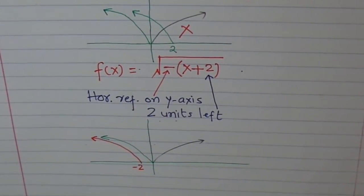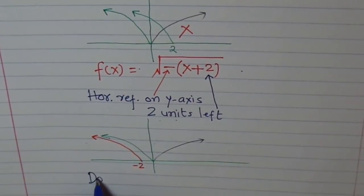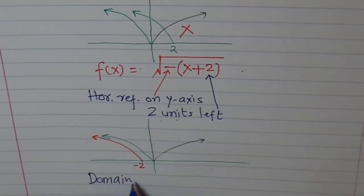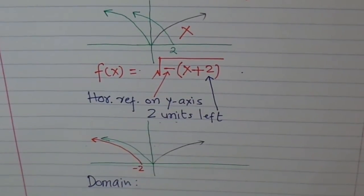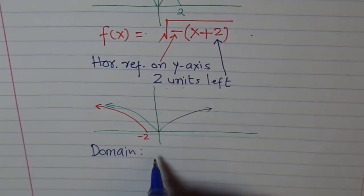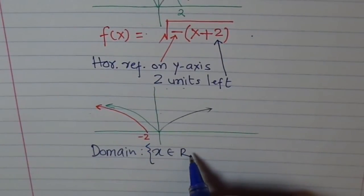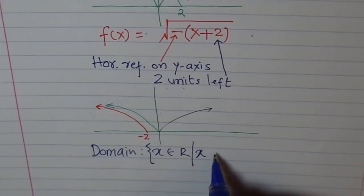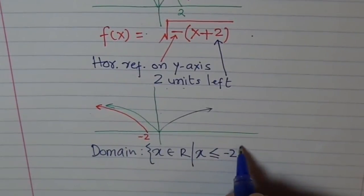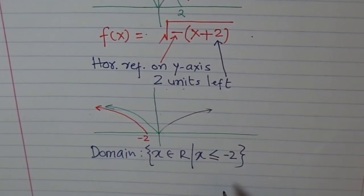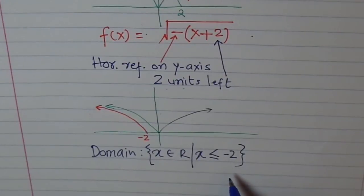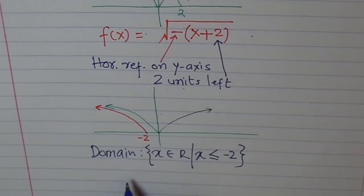So now, can you tell me what is the new domain and range for this function? The domain is? It has changed. Domain is x belongs to real number where x is less than equal to minus two. Do you understand? X is less than equal to minus two. Earlier, you got x less than equal to two. That was wrong.